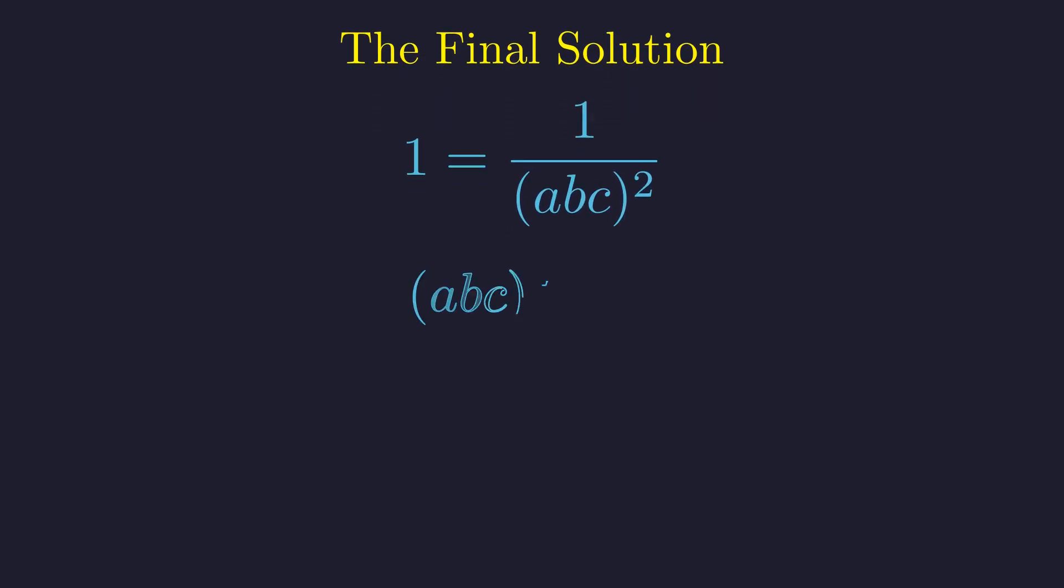We are just one step away from the answer. From here, we can solve for ABC. Multiplying both sides by ABC squared, we find that the square of the product is equal to 1.